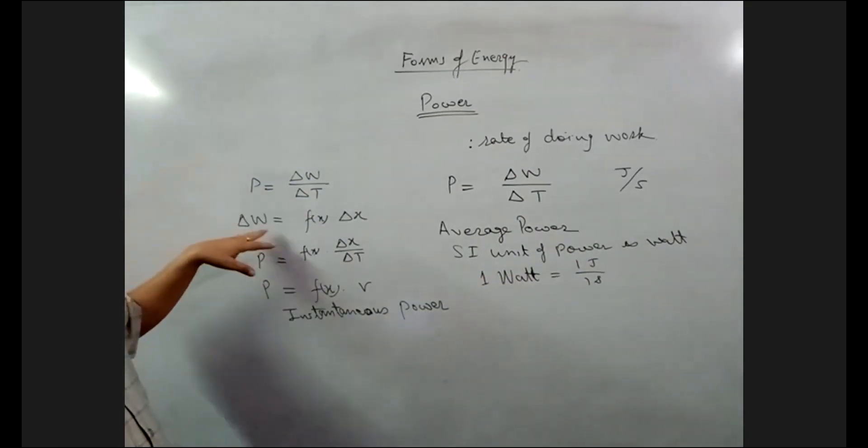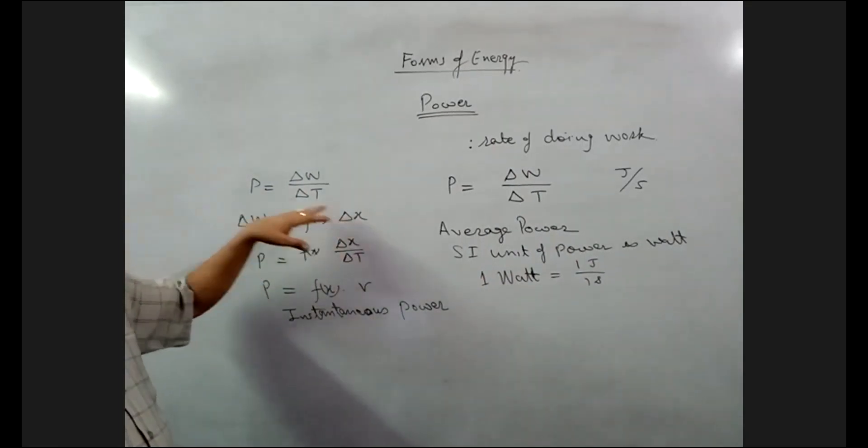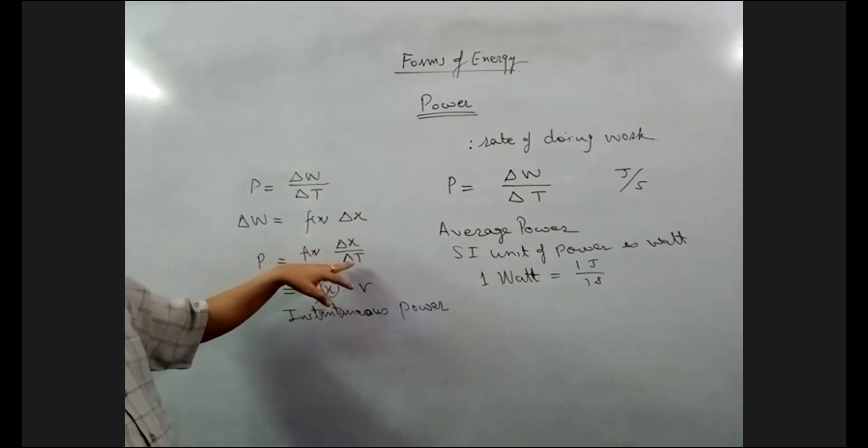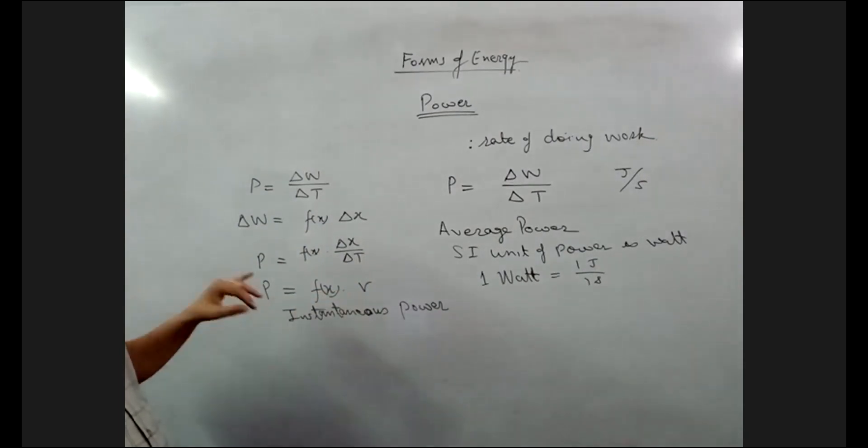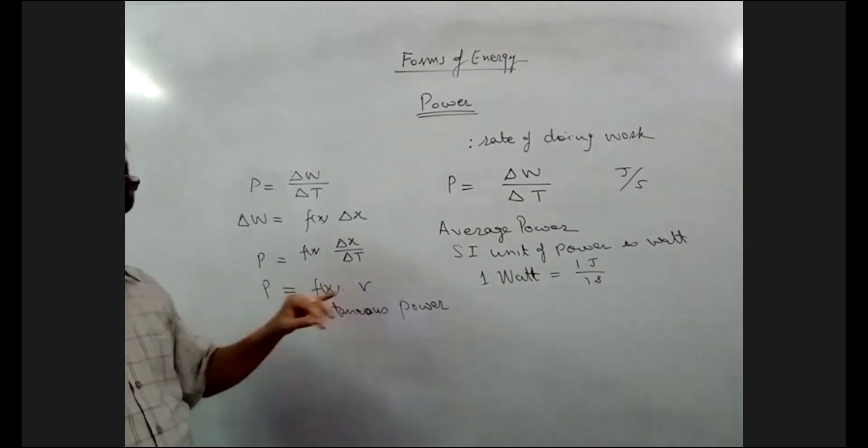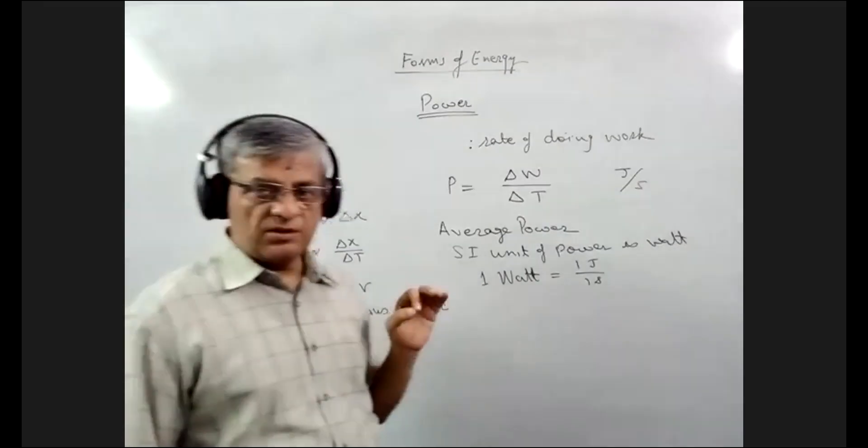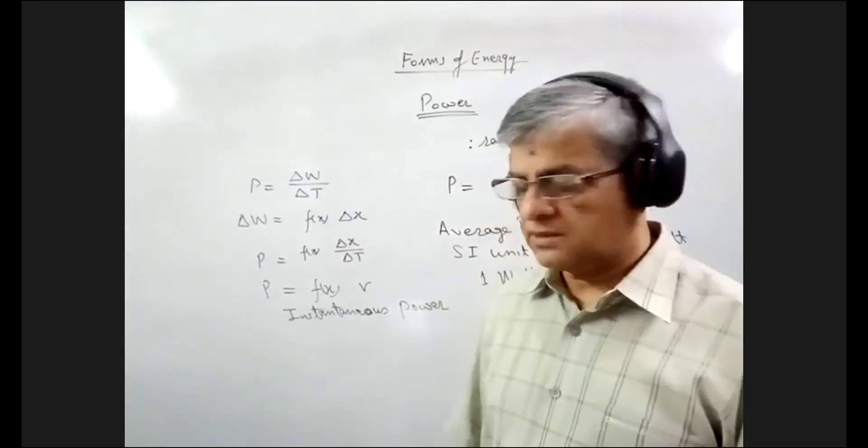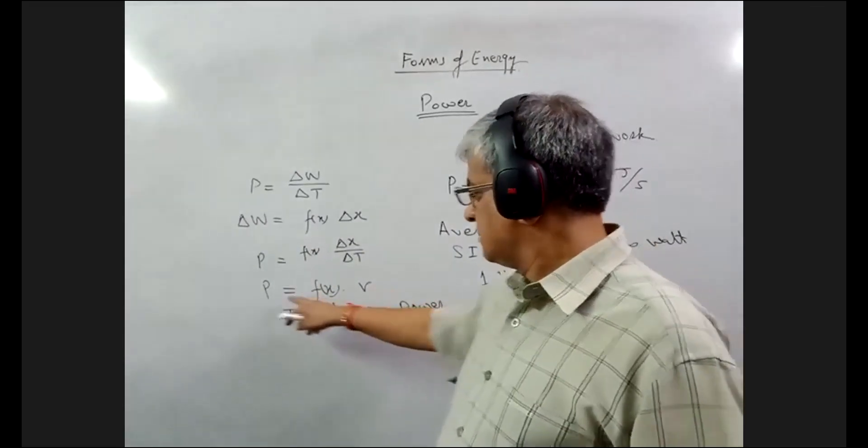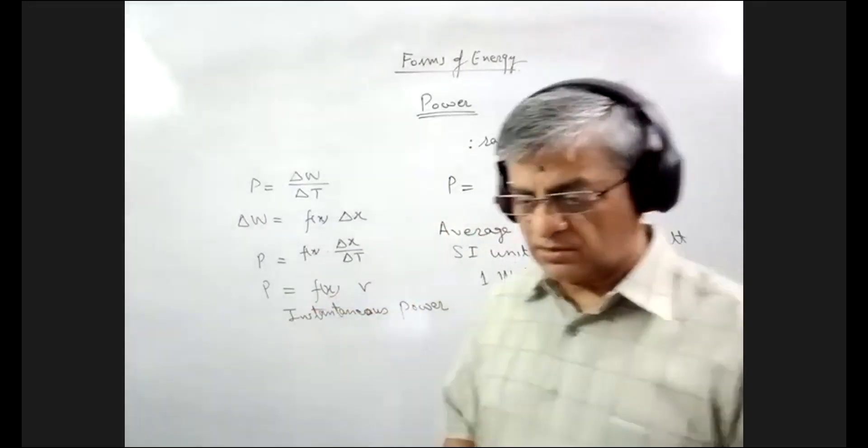Now, amount of work done is equal to force into displacement. If we replace this work by force into displacement, we get here force into delta x upon delta T. And this rate of change of displacement is termed as velocity. So power is also equal to force into velocity. This is for numericals. Force into velocity gives you instantaneous power.